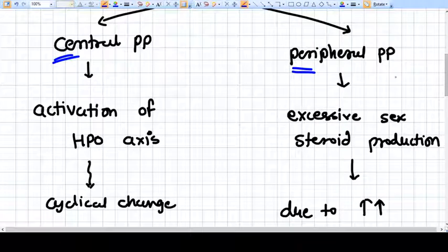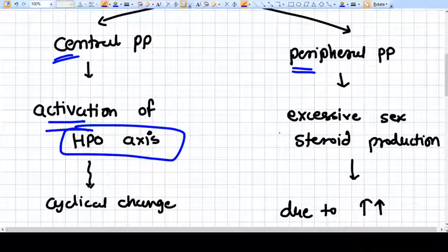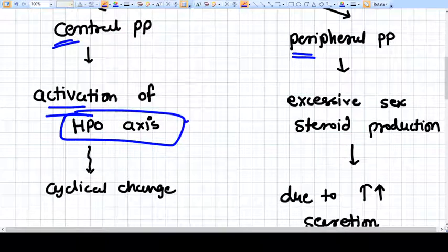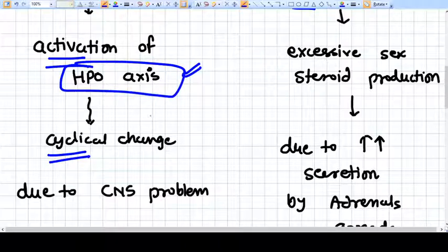Because in central precocious puberty there is a premature activation of HPO axis - hypothalamic pituitary ovarian axis. This axis is prematurely activated, so the changes in the hormones are cyclical. The hormone will change cyclically.